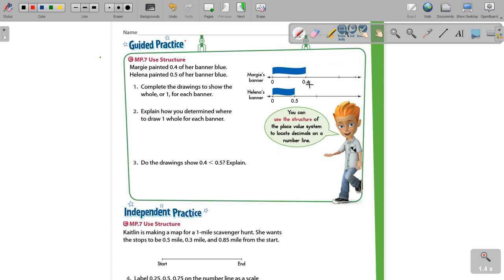And what I mean by that is that Margie's banner, she's only done 0.4 of the banner. She's only painted 0.4 of the banner. Now Helena, she's got 0.5, which means that's a greater number, but it looks smaller here. And it only looks smaller because we're looking at something that is just drawn slightly differently.